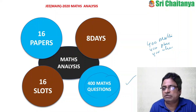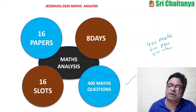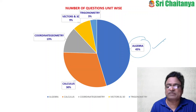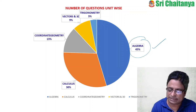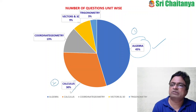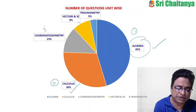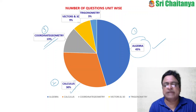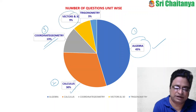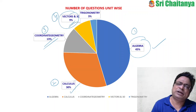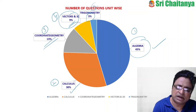Today I am concentrating on coordinate geometry. I have divided the entire mathematics into five parts: Algebra has 45% weightage, Calculus has 30%, Coordinate Geometry has 13%, Vectors and 3D has 9%, and Trigonometry has 3% in JEE Main 2020.